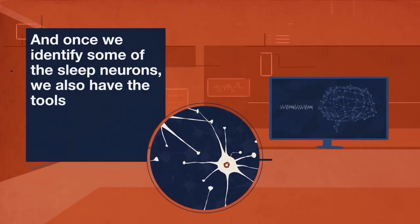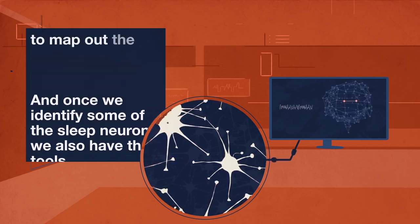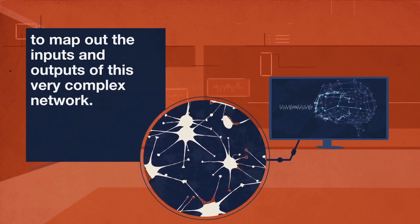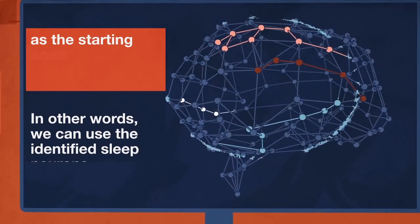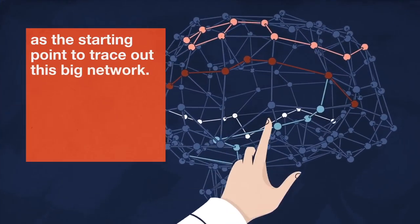And once we identify some of the sleep neurons, we also have the tools to map out their inputs and outputs of this very complex network. In other words, we can use the identified sleep neurons as a starting point to trace out this big network.